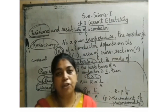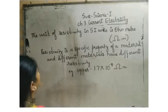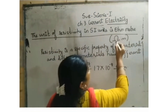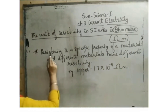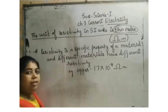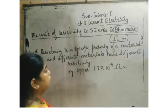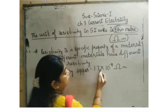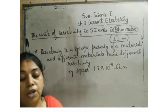What are the units of resistivity? The unit of resistivity in SI units is ohm-meter. Resistivity is a specific property of a material, and different materials have different resistivity. Each and every material has its own resistivity. For example, copper has its resistivity as 1.7 × 10⁻⁸ ohm-meter. Like for an example, diamond has its own resistivity - it is given very clearly in your textbook.